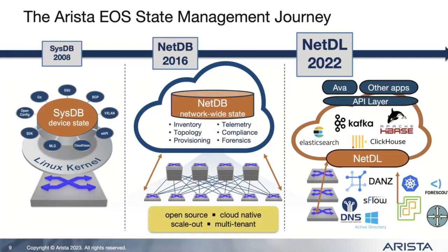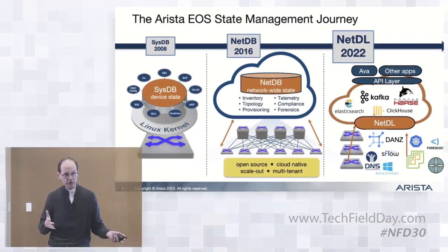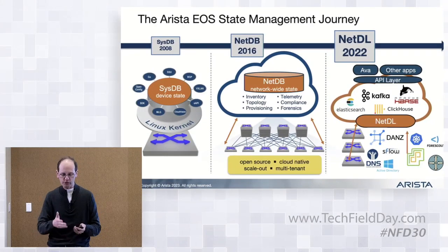NetDB takes all that state across all those switches and brings it centrally into one database. So you have not just the current state of your network, but a time series of every state element across every switch in your infrastructure. This let us build the CloudVision product with network-wide visibility, automation, provisioning, bug alerts, RFE, compliance, and all the telemetry and monitoring based on having access to all the state. You could answer questions like, what did my routing table look like two weeks ago? The last time I saw that anomaly, what was going on with a particular neighbor? All that information is stored in the time series.